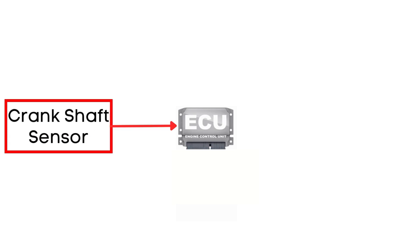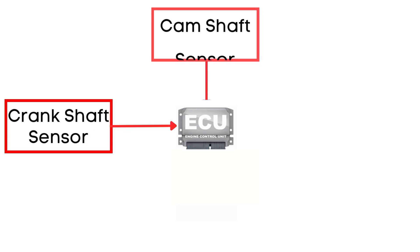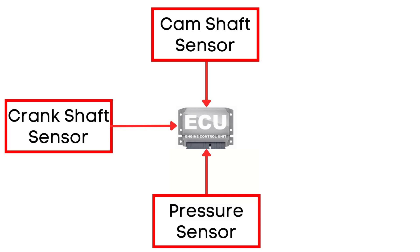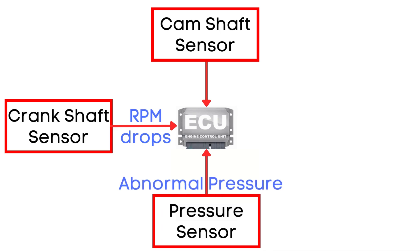The Engine Control Unit, or ECU, monitors the signals from the Crankshaft Position Sensor, Camshaft Position Sensor, and Cylinder Pressure Sensor. These sensors provide real-time data about your engine's performance. When a misfire occurs in one or more cylinders, it causes the engine's RPM to drop abruptly. Simultaneously, the pressure inside the cylinder becomes abnormal. This sudden change in signals from the sensors is what the ECU reads as a misfire.